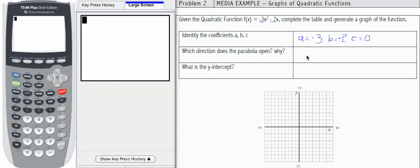Which direction does the parabola open? Again, the parabola opens up or down depending on the value of a. In this case, a equals negative 3, which is less than 0.